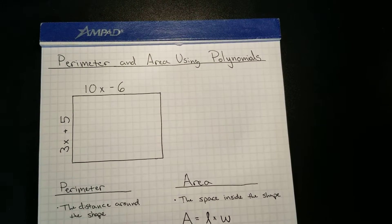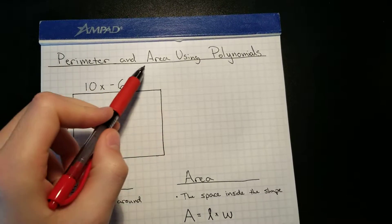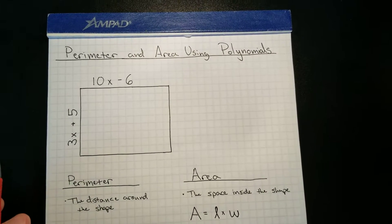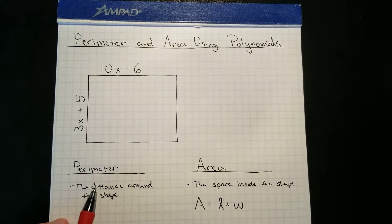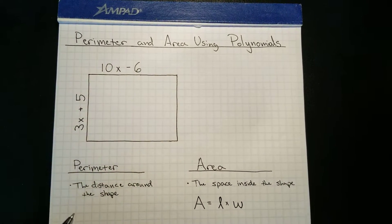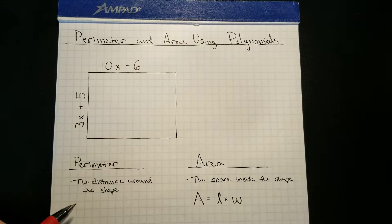All right, for today's lesson we are going to be working with perimeter and area of shapes that are going to be using polynomials. So to find the perimeter of a shape, usually you have some numbers on the sides, and the perimeter means the distance around the shape, so all you would have to do is add up the sides.